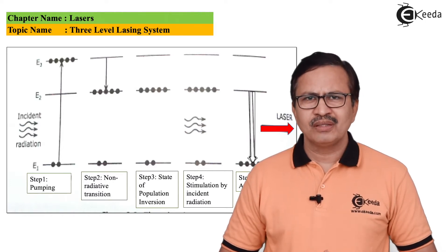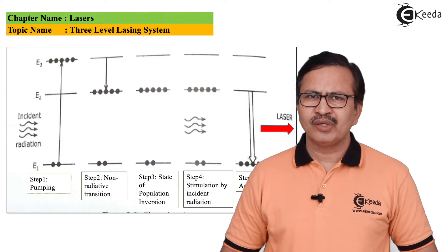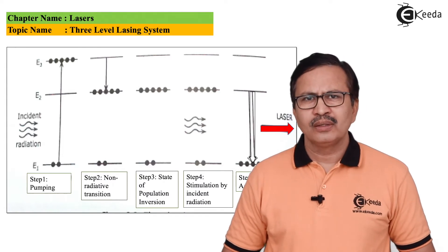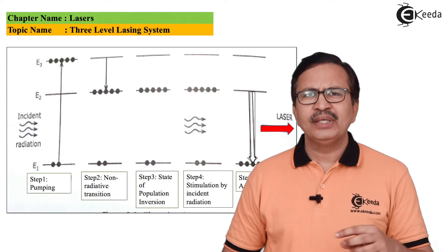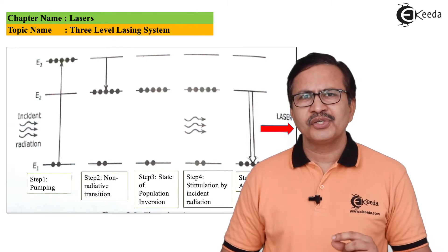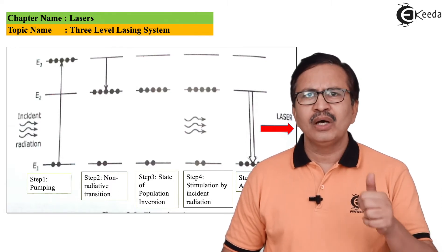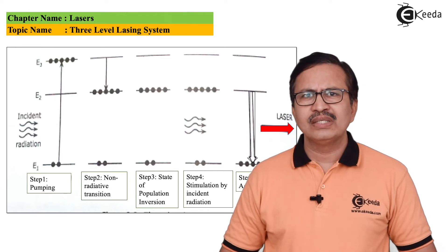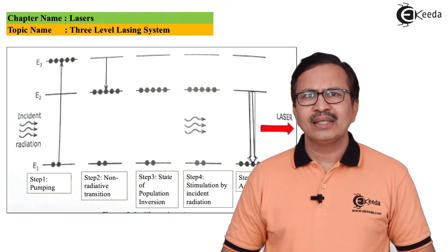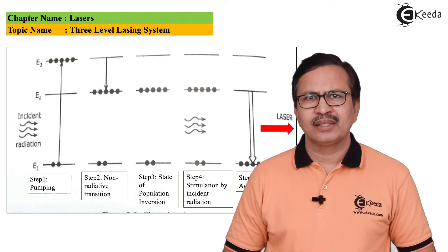Once population inversion occurs, this is a very favorable condition for stimulated emission to occur. So any spontaneously emitted radiation photon will actually now trigger the fall of these atoms which are present in the excited metastable state.